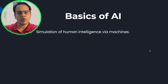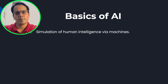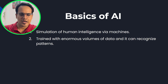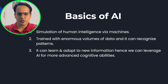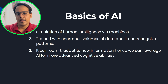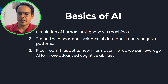A quick basics of AI — artificial intelligence is nothing but simulation of human intelligence via machines. We are mimicking human intelligence via code and machines. For that, we train programs or machines with enormous volumes of data, and with that data it can recognize patterns. When it recognizes patterns, it can learn and adapt to new information based on previous data it has been trained on.